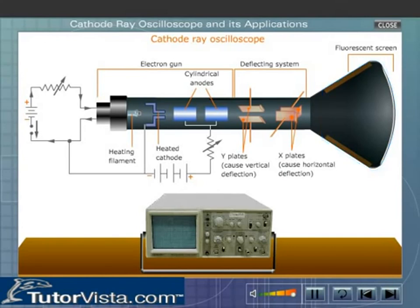The fluorescent screen: the end of the tube is made flat like a screen and is coated from the inside with a phosphorescent material. The screen glows when a beam of electrons hits it.